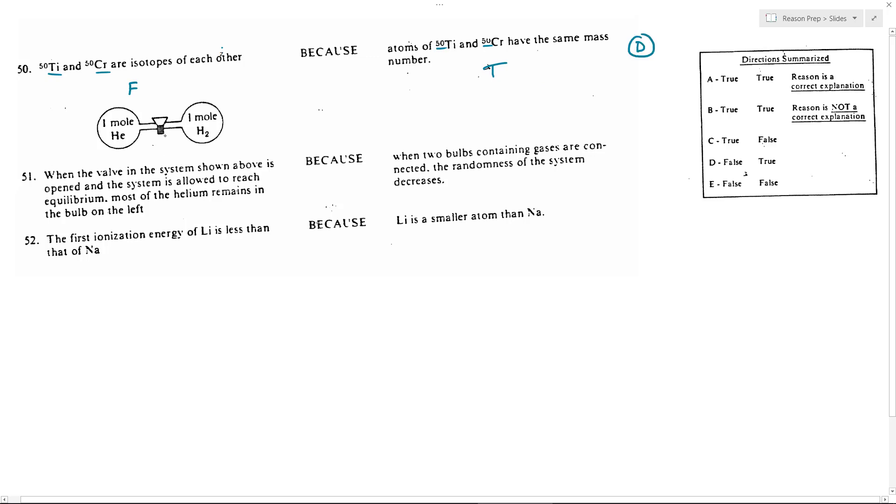When the valve in the system shown above is opened and the system is allowed to reach equilibrium, most of the helium remains in the bulb on the left. So when you open this up,